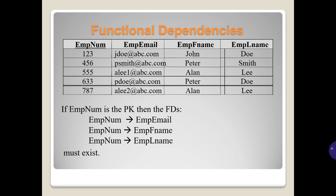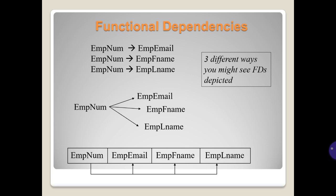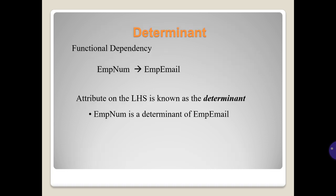If employee number is a primary key, then the functional dependencies — employee number → employee email, employee number → employee first name, and employee number → employee last name — must exist. There are three different ways you might determine functional dependencies. The attribute on the left-hand side is known as the determinant. Employee number is a determinant of employee email.